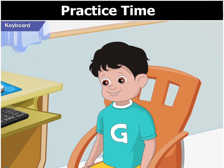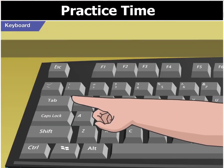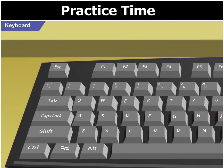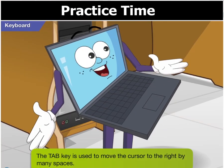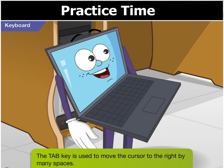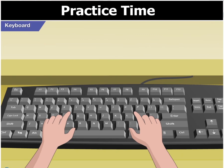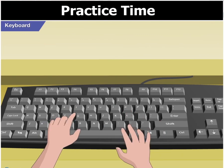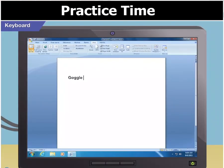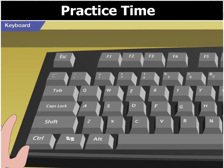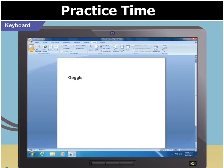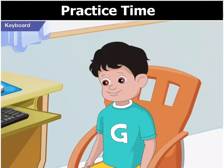Got it, Goggle. Now, what does this tab key do? The tab key is used to move the cursor to the right by many spaces. Type your name and then press the tab key. See the cursor movement? Then type my name. Okay, now I get it.